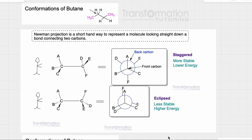In this video we will learn how to draw all of the conformations of butane as Newman projections, and I am going to teach you my tips and tricks. But first, what is a Newman projection? It's a shorthand way to represent a molecule looking straight down the bond connecting two carbons.